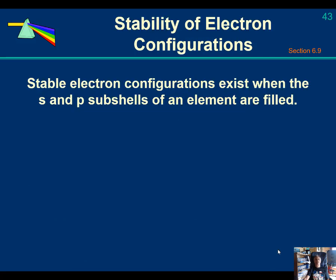All right, so stability of electron configurations. Stable electron configurations exist when the S and P subshells of an element are filled. So let's go ahead and look at group 8.